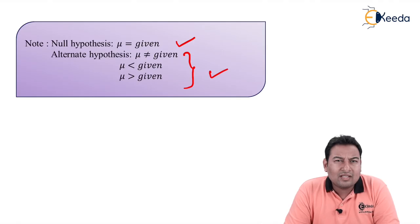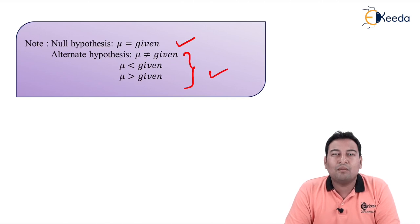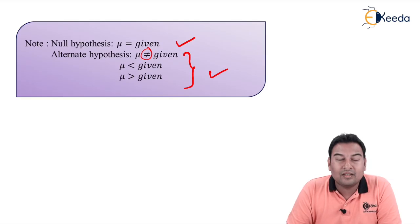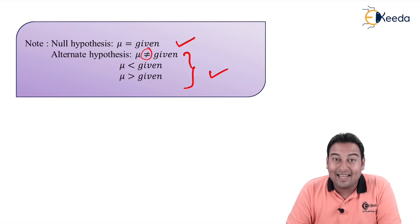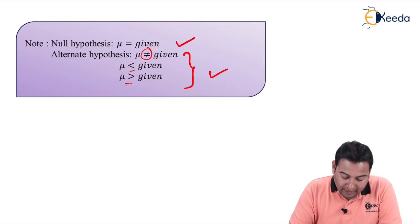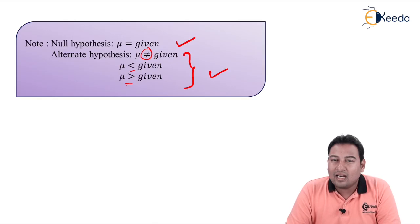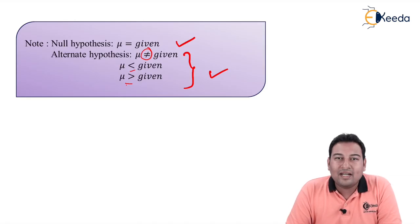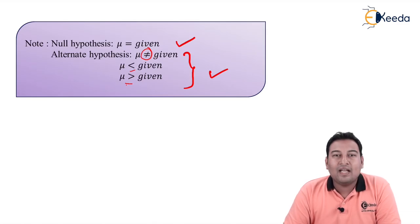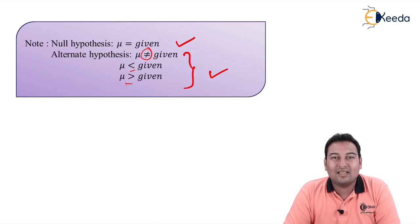The concept of one-tailed and two-tailed from large sample test applies here also. If the alternate hypothesis is not equal to, then it is a two-tailed test. If it is less than or greater than, then it will be a one-tailed test. In large sample test we found Z alpha, and here in small sample test we are going to find the value of T alpha.